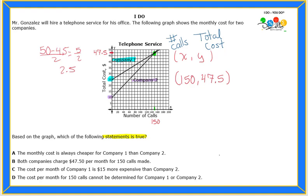Let's look at the answer choices. Maybe one of those can help us see the answer. For letter A, it says the monthly cost is always cheaper for Company 1 than Company 2. Is that true? Is Company 1 always cheaper? No, because it says always.